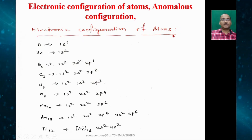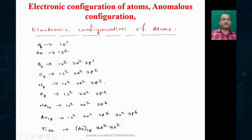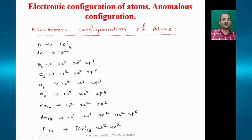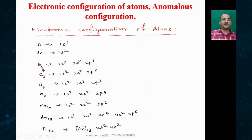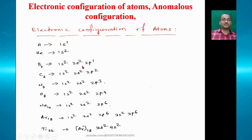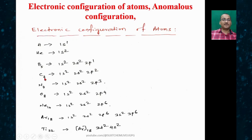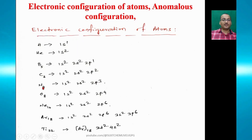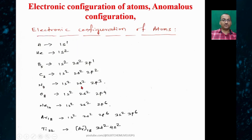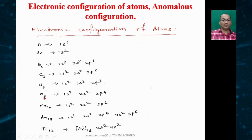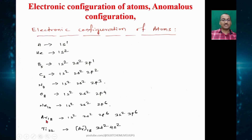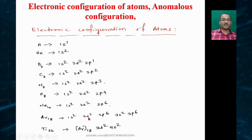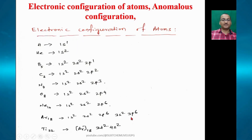Following the Aufbau principle, the electronic configurations of atoms: hydrogen (1 electron) = 1s¹; helium (2 electrons) = 1s²; boron (5 electrons) = 1s² 2s² 2p¹; carbon (6 electrons) = 1s² 2s² 2p²; nitrogen (7 electrons) = 1s² 2s² 2p³; oxygen (8 electrons) = 1s² 2s² 2p⁴; argon (18 electrons) = 1s² 2s² 2p⁶ 3s² 3p⁶.